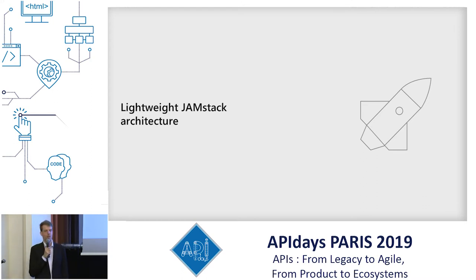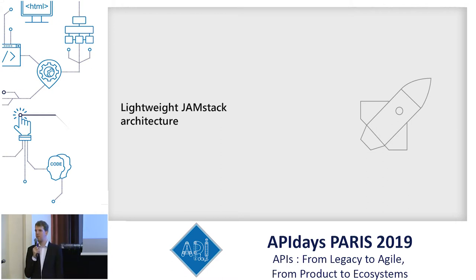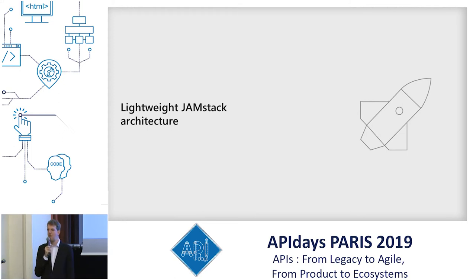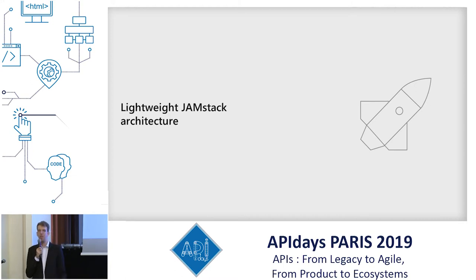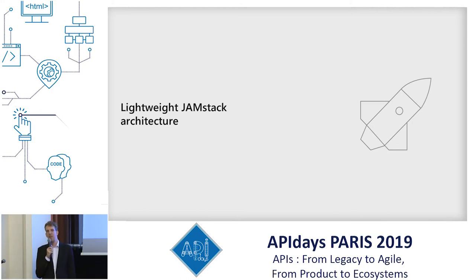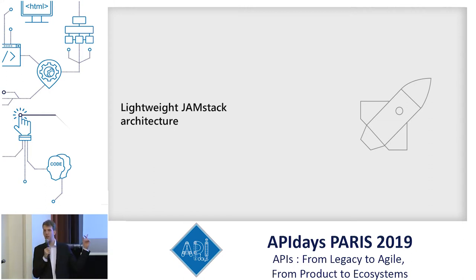We decided to go with a lightweight JAMstack architecture. JAM stands for JavaScript, APIs, and Markup. In practice, every piece of content — every page, style, configuration, etc. — is stored as markup documents, JSON documents in our case, which are then compiled and built into static HTML pages and static media files like JPEGs and PNGs. Any dynamic data, like user information or a list of APIs I'm authorized to see, is fetched through APIs at runtime from client-side JavaScript in the browser.